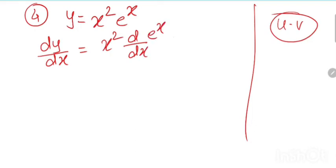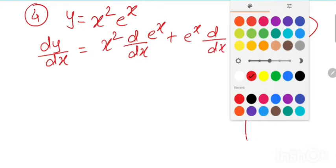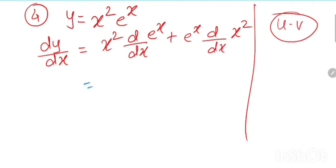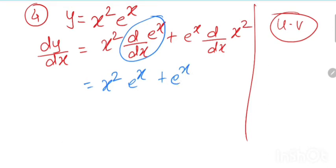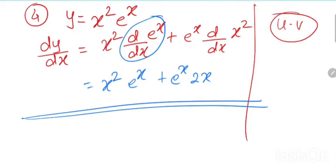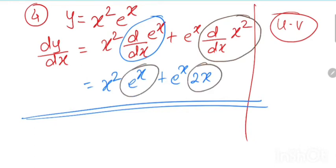dy by dx equals x square times d by dx of e to the power x, plus e to the power x times d by dx of x square. The derivative of e to the power x is e to the power x, and the derivative of x square is 2x. So the answer is x square e to the power x plus 2x e to the power x.